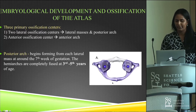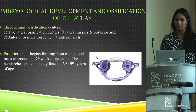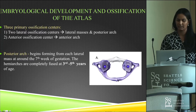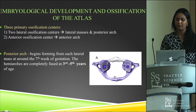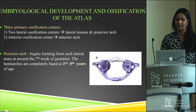At birth the posterior arch doesn't completely fuse — there is a narrow segment of cartilage. It's only when the patient reaches about three to five years of age that it completely fuses and forms a union. If fusion of this region does not occur, it results in a cleft in the posterior arch.